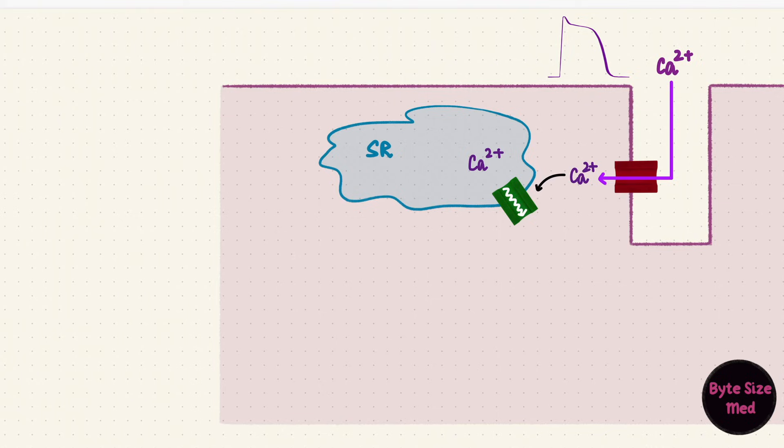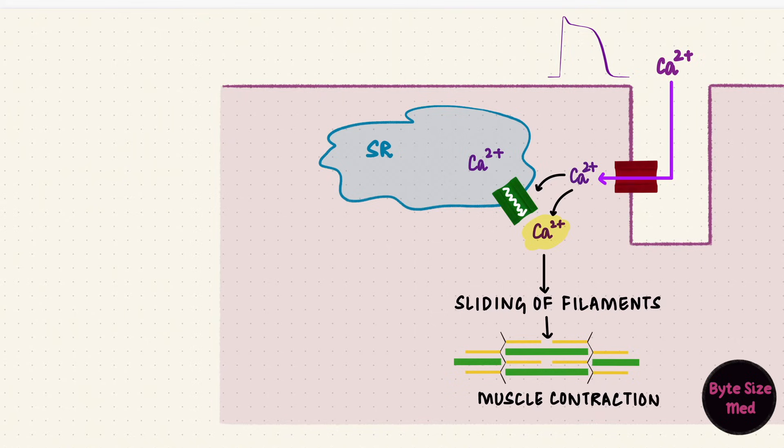This is a calcium release channel, which now lets calcium exit the sarcoplasmic reticulum and the intracellular calcium rises. That's then going to result in the sliding of thin filaments over thick filaments, making the muscle contract. And that process is excitation-contraction coupling.